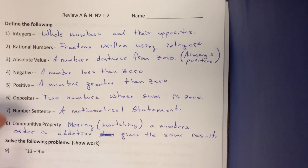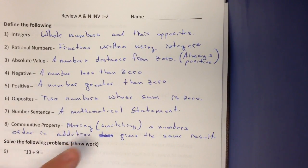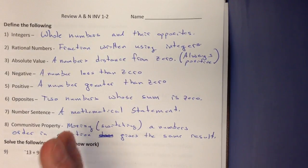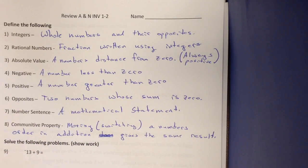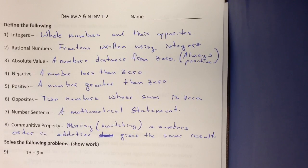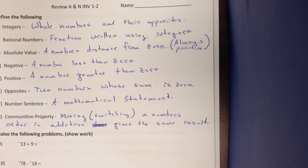And commutative property. Remember, commute means move. So moving or switching numbers around in an addition problem. That works for other problems, but we're not there yet. But in an addition problem, gives you the same answer. So commutative property, we can move those numbers around and get the same answer. Does not work in subtraction.